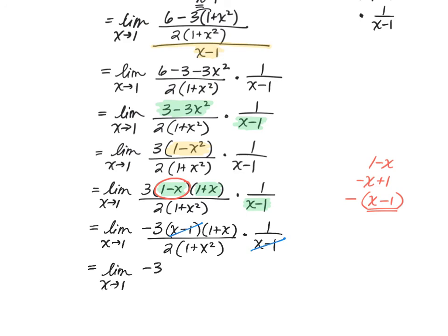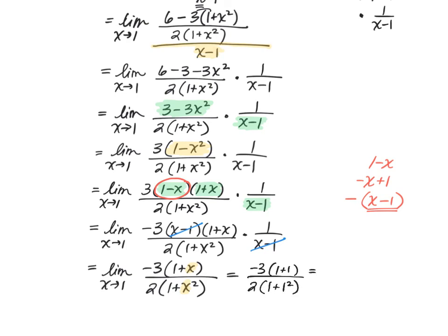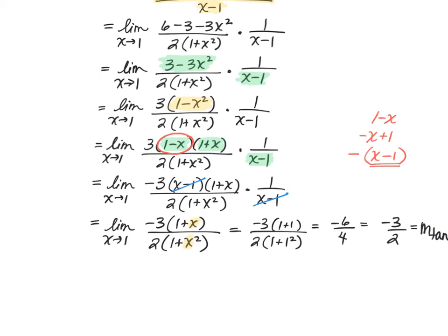After canceling, we have the limit as x approaches 1 of negative 3 times (1 plus x), divided by 2 times (1 plus x²). Now we can use direct substitution: substitute 1 in for x. Negative 3 times (1 plus 1) divided by 2 times (1 plus 1²) gives negative 3 times 2 in the numerator, which is negative 6, and the denominator is 4. So we get negative 3 halves — the slope of the tangent line. To finish, using point-slope form: y minus 3/2 equals negative 3/2 times (x minus 1).